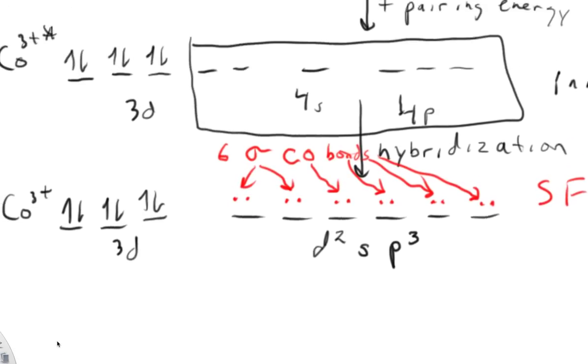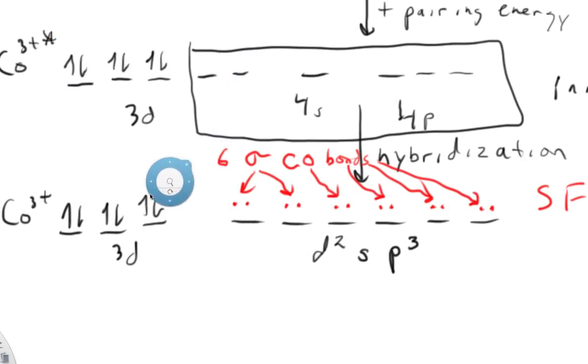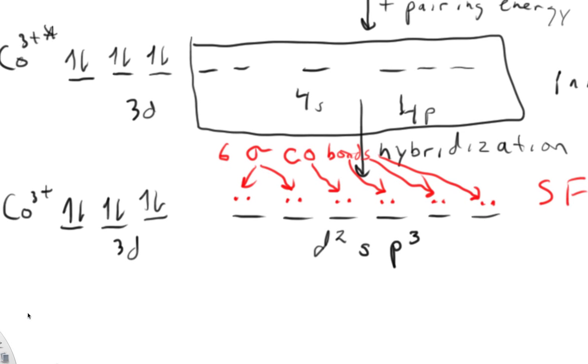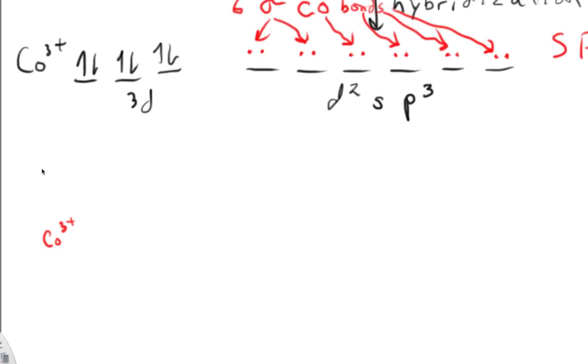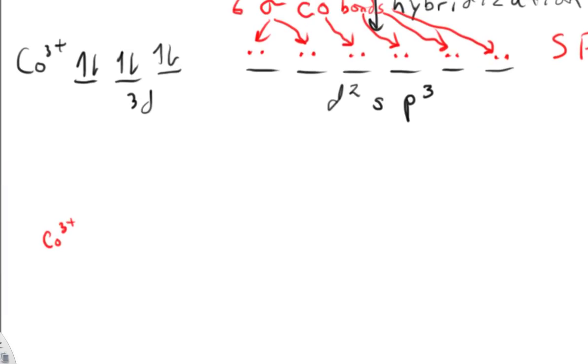before it's hybridized. This d orbital is going to be split because the interaction between these six ligands and these five orbitals is not equal. Two of the orbitals interact differently from three of the orbitals. So I want to draw that split for you now. And it looks like this.